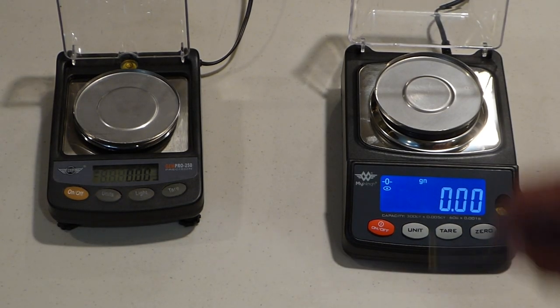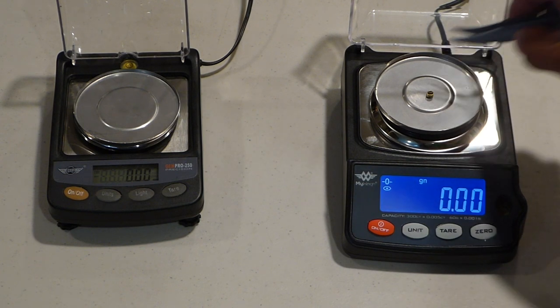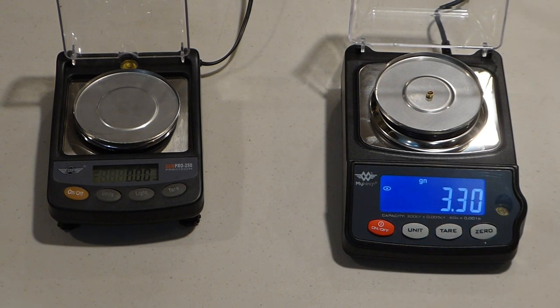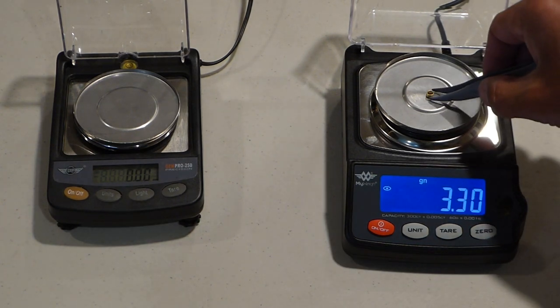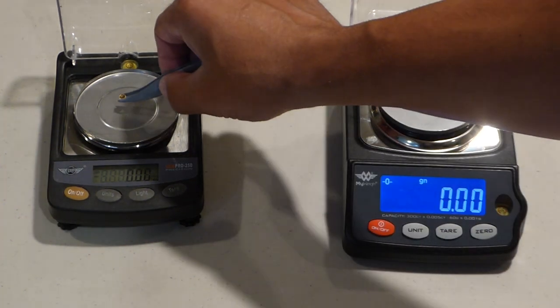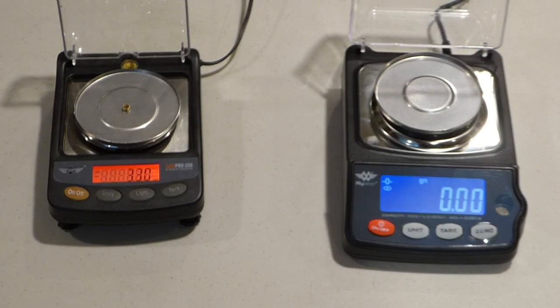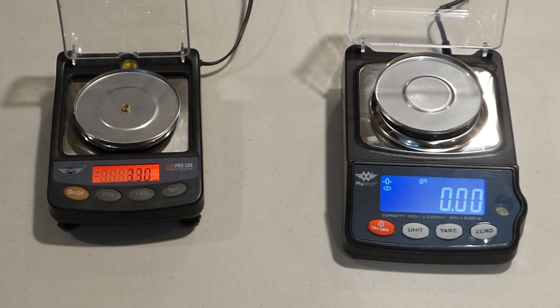Alright, so one more item here we will weigh. Here is a primer, a single primer. Put it on the GEMPRO 300. 3.30 grains. And I will take that off. Put it on the 250. Wait for it to go. 3.30 grains. So, again, scales seem to have accuracy almost identical between the two of them.